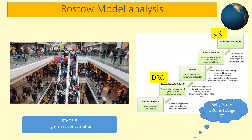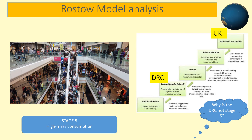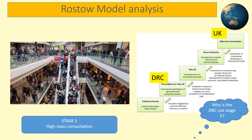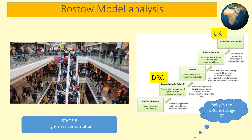Stage four and five on the Rostow model are for advanced countries like the UK. Here there are mainly tertiary services, with fewer people involved in manufacturing and agriculture. People use their wealth to buy or consume expensive high-end products, and use their money to employ other people to work for them. The DRC is clearly not at this stage, as they do not have a lot of finances to buy designer goods — rather, many people use their money simply to buy food in order to survive.